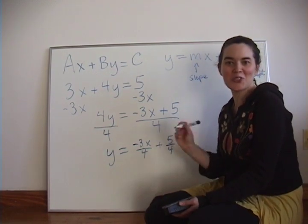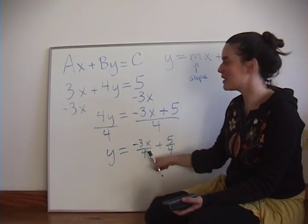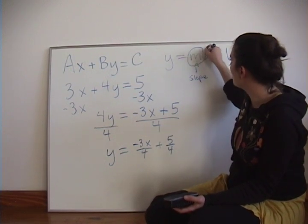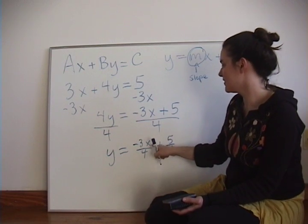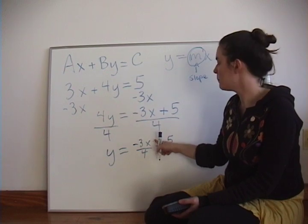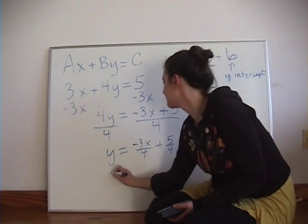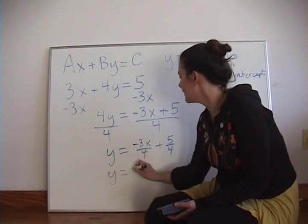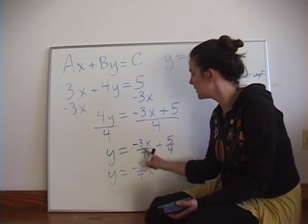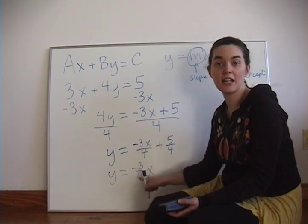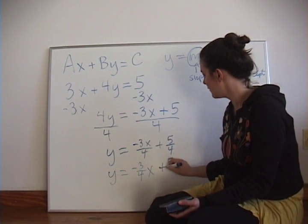So we're so close. We're almost to slope-intercept form. Usually in slope-intercept form, the slope is just one number. And here, X is in the numerator. So we're going to pull this out, so it's just one number in front of X. So we can write negative 3 fourths X, because negative 3x divided by 4 is the same as negative 3 fourths X plus 5 over 4.